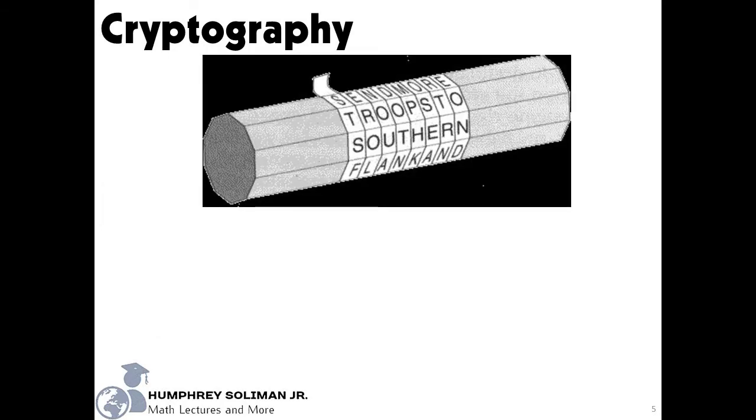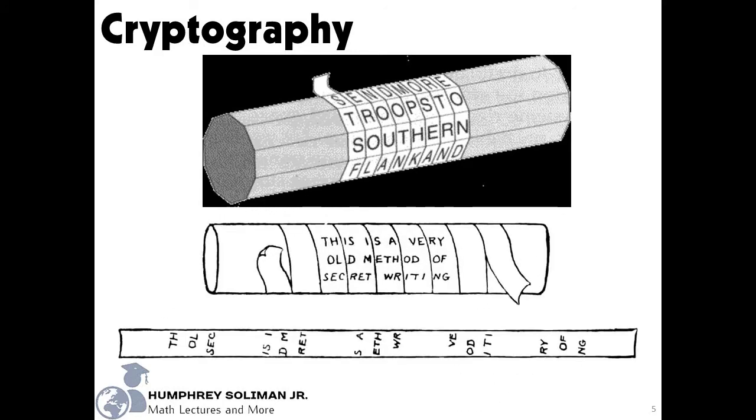A scytale is a tool used to perform a transposition cipher, consisting of a cylinder with a strip of parchment wound around it on which a message is written.